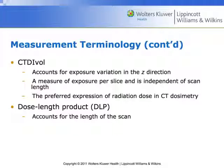Finally, from CTDI volumetric we can calculate a dose length product — the DLP. The machine calculates it for us; it accounts for the length of the scan. It's basically the CTDI volumetric multiplied by the scan length. So the CTDI is the smaller number and the DLP will be a bigger number.